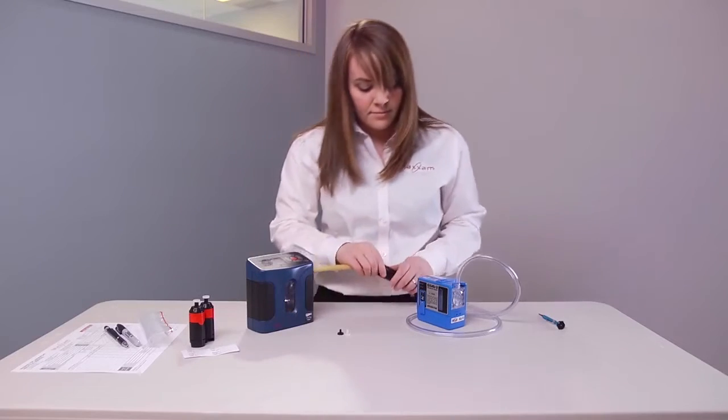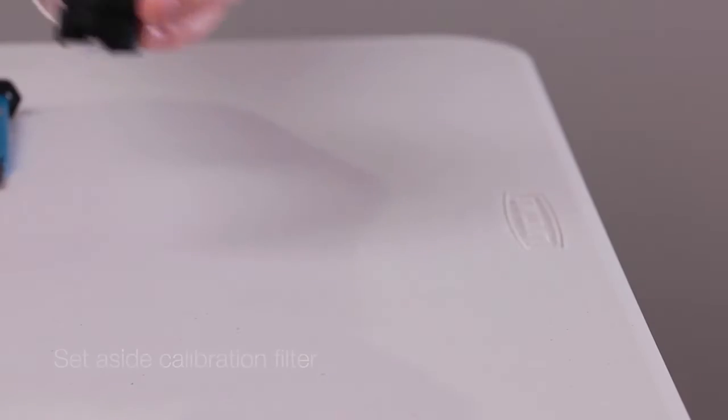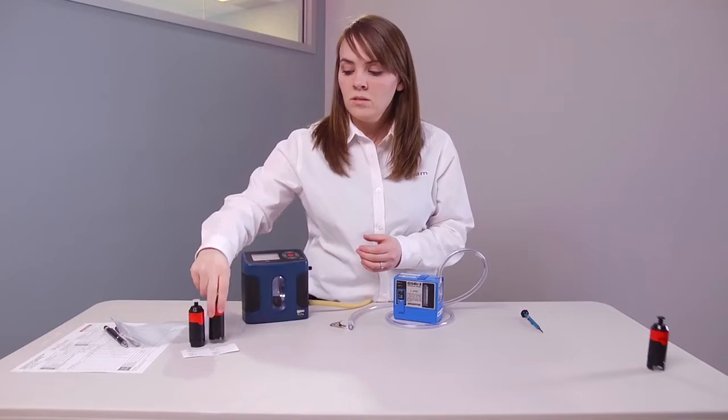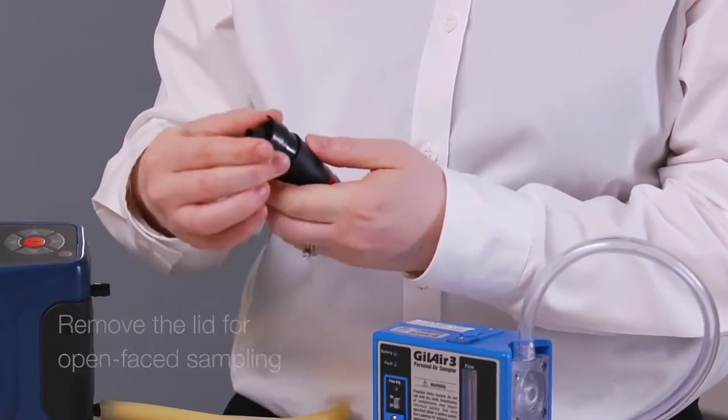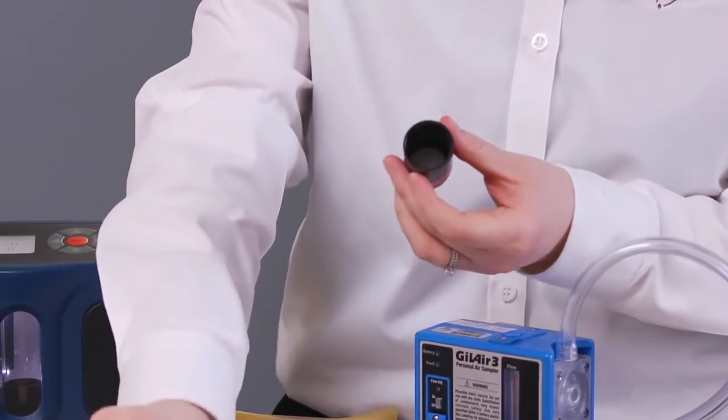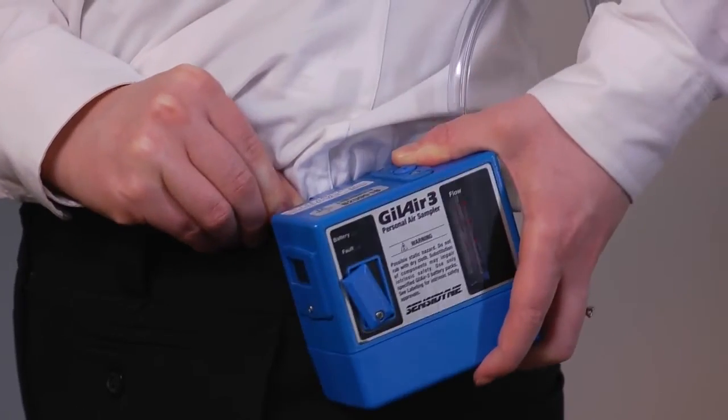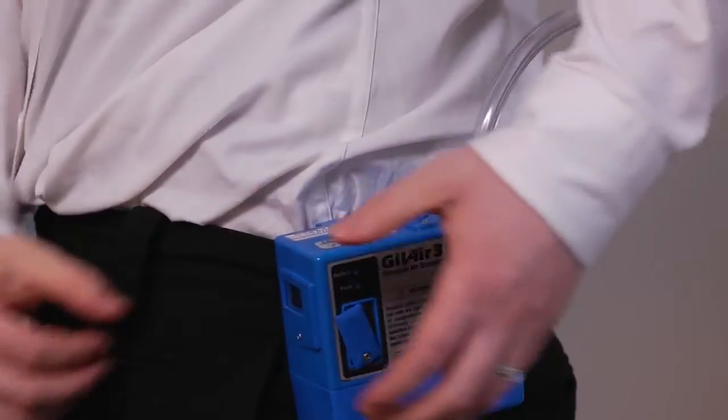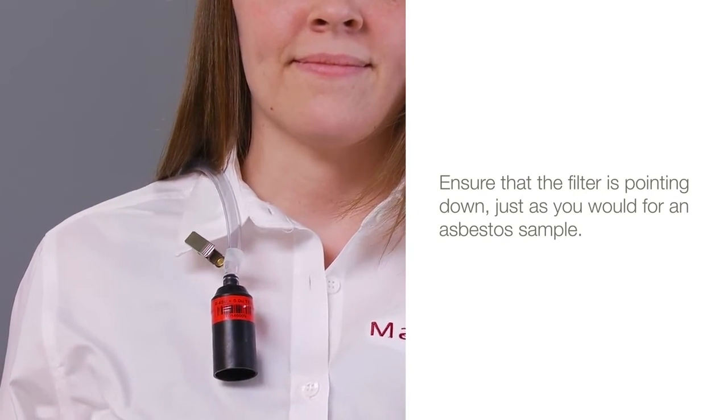After calibrating, turn off the pump, remove the calibration filter, and set it aside. Take a new cassette and remove the lid for open-faced sampling. Ensure that the filter is pointing down, just as you would for an asbestos sample.